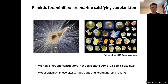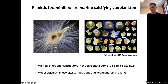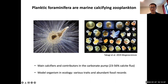FoRan is also interesting in an ecological context because they don't have many species diversity — there are around 50 species in the modern ocean — but they have very abundant trait diversity. For example, some species have spines, symbionts, and a test, which are classification traits. Basically, it means they can be mixotrophs and receive energy from solar light or from other zooplankton or phytoplankton.